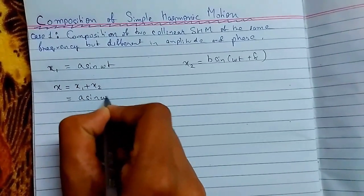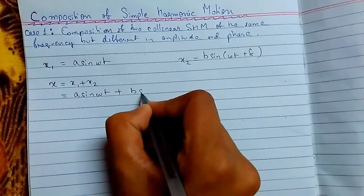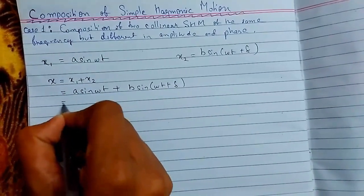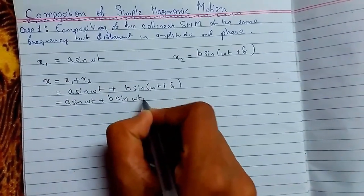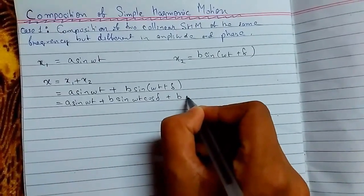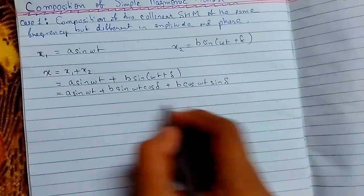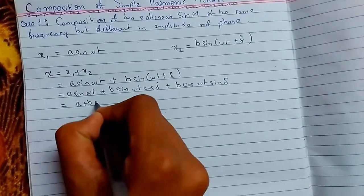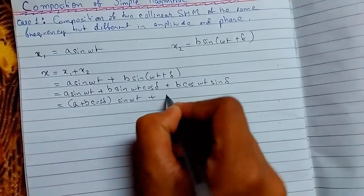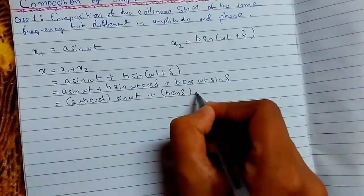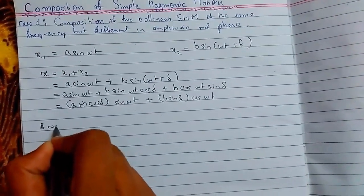We expand this: x equals a sine(ωt) plus b sine(ωt + δ). Applying the sine addition formula, this becomes a sine(ωt) plus b sine(ωt)cos(δ) plus b cos(ωt)sin(δ). Arranging terms: (a + b cos δ) sine(ωt) plus b sin(δ) cos(ωt).